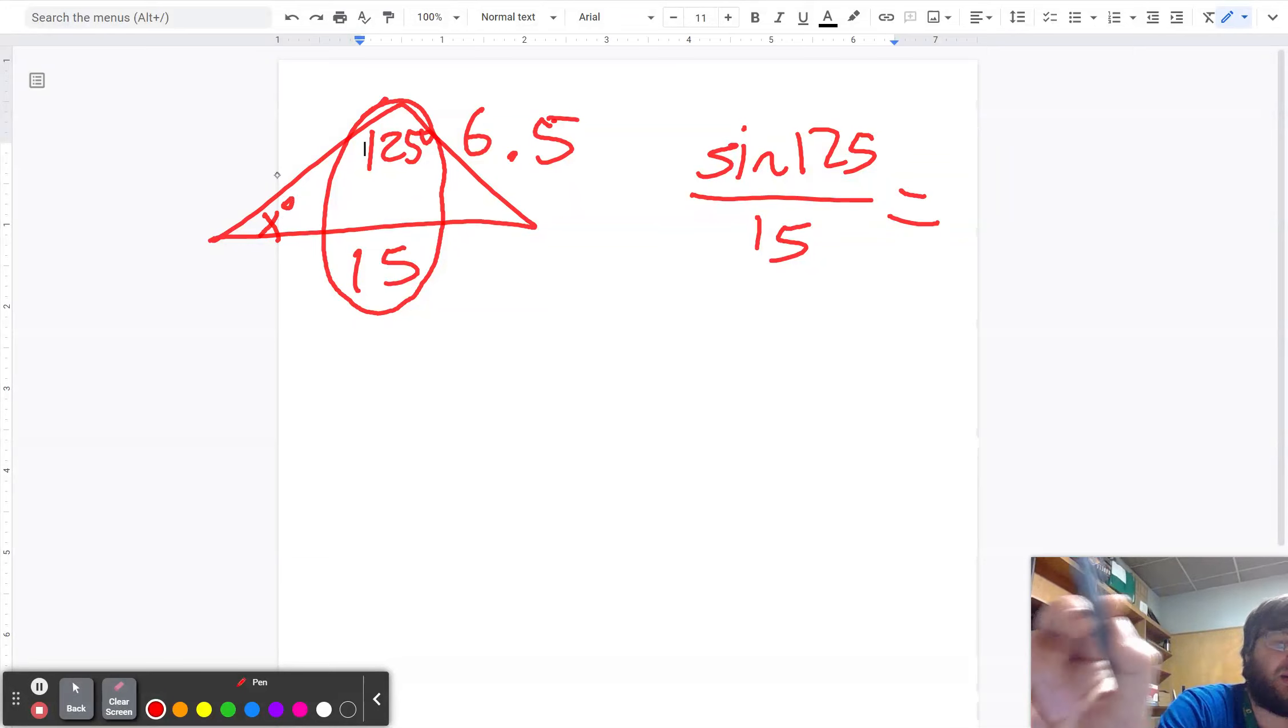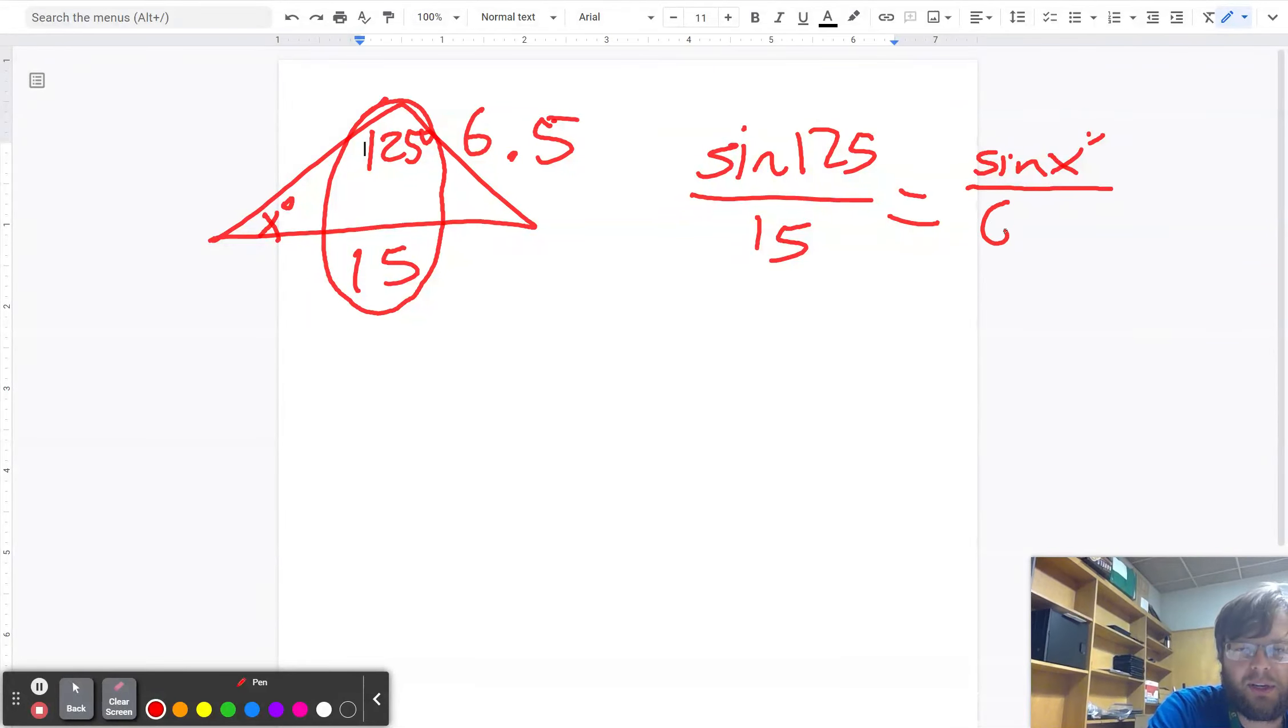let's give this a name right here, this one right there, call it X, X has got to be equal to sine of X degrees divided by 6.5.